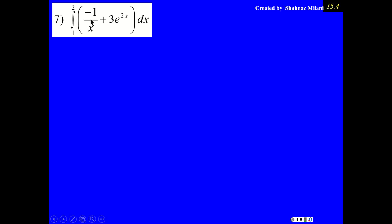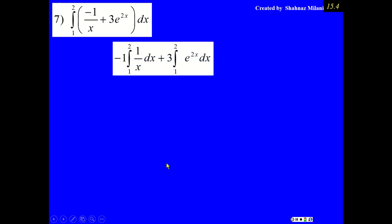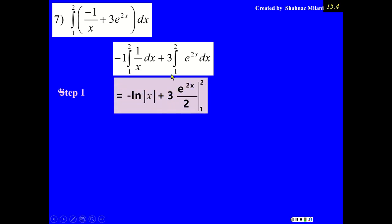For this part, minus 1 is the coefficient. For this part, 3 is the coefficient. Now, this minus 1 is the coefficient, then antiderivative of 1 over x is going to be natural log of x.